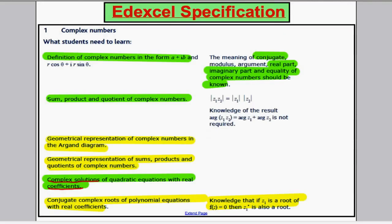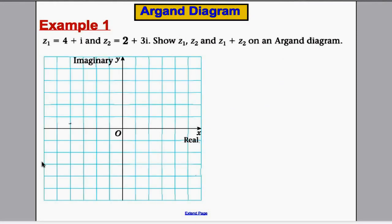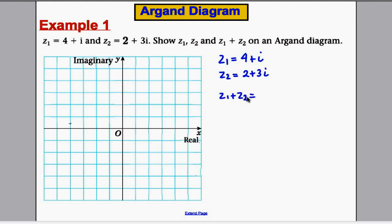Going back to our syllabus, it says we have to represent complex numbers in the Argand diagram, and the key thing is we have to be able to represent sums, products, and quotients of complex numbers in the Argand diagram. So let's do one of each. Here's an example — we have complex number z1 = 4 plus i and z2 = 2 plus 3i. We're asked to show z1 and z2 in the Argand diagram and also show the sum z1 plus z2. Z1 plus z2 turns out to be 6 plus 4i. So we're going to label each of these in the Argand diagram.